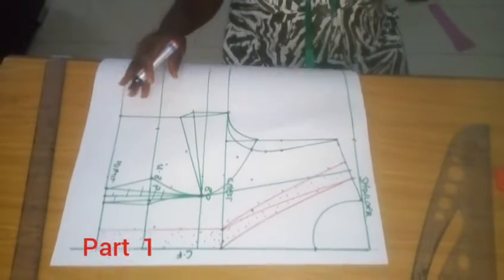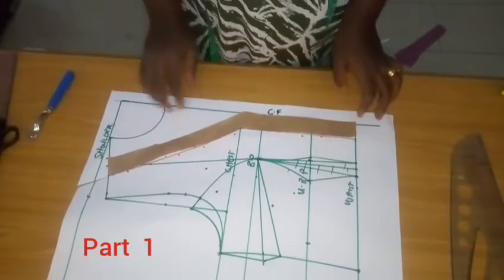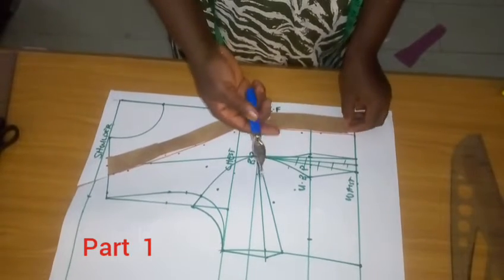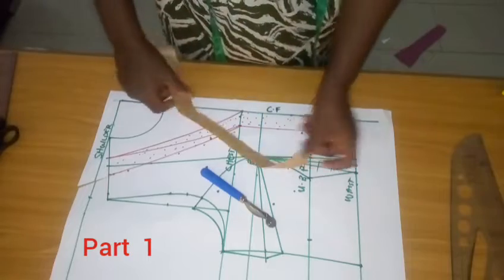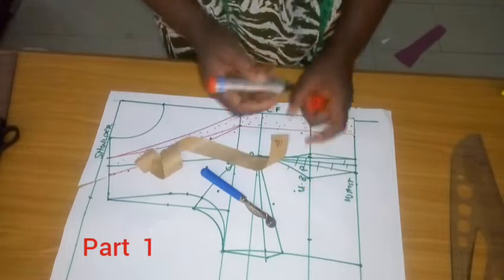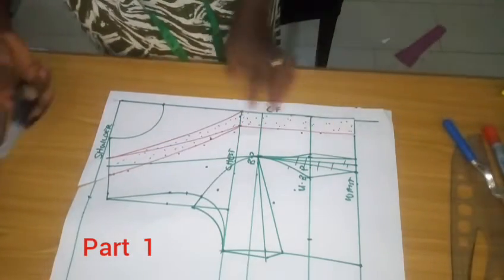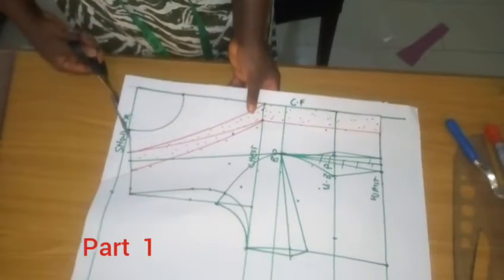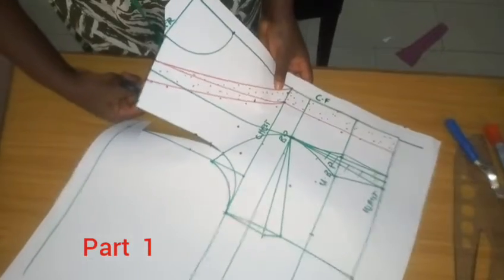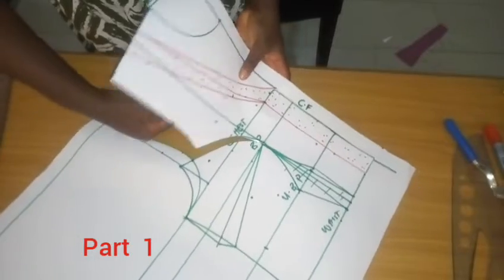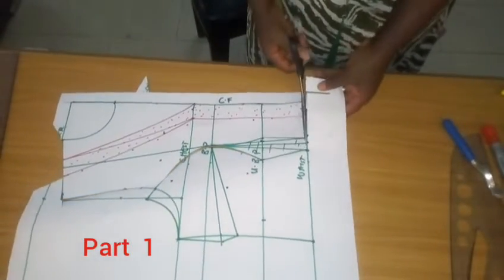I'm going to trace out my facing and then cut out the bodice. I've traced out my facing using my tracing wheel. I label it so I know the upper part of the facing when placing it on fabric. Now it's time to cut what we have on our pattern. I cut into the shoulder armhole and then cut my princess dart, and cut off what I have on the waistline.